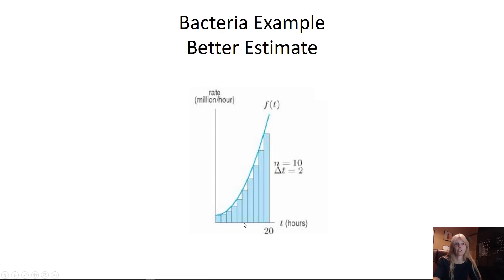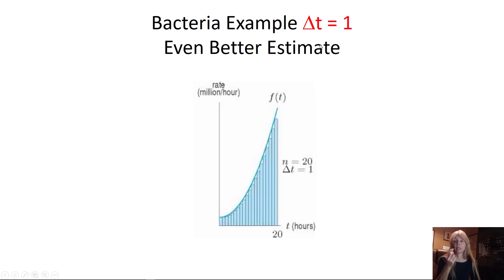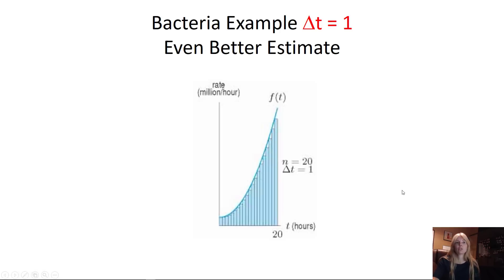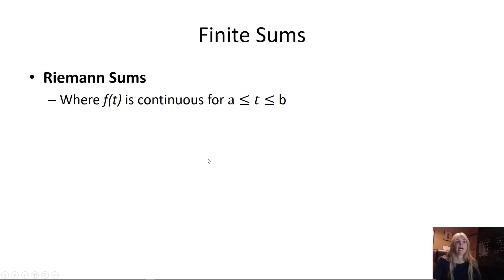The total change comes out to 288, which is a better estimate because I have smaller subintervals — a smaller Δt. You can even see on the graph that the blank area not being accounted for is getting smaller. To get a better estimate, make the interval smaller and smaller. The key to this section is to convince you that you want to let that interval go to zero — and that's a limit.